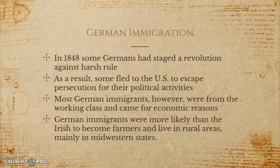There are a few differences between Irish immigrants and German immigrants you should know about. German immigrants were more likely than the Irish to become farmers and live in rural areas. Many German immigrants also arrived in the US with some money to their name. Even so, German immigrants were still often forced to take low-paying jobs such as tailors, bricklayers, and servants.